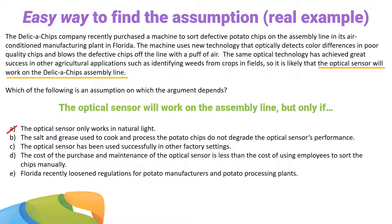Let's take a look at C: but only if the optical sensor has been used successfully in other factory settings. C is actually out — just because it worked in other factory settings doesn't necessarily mean it will work in this particular factory. Now D: but only if the cost of the purchase and maintenance of the optical sensor is less than the cost of using employees to sort the chips manually. D is out — we don't care about costs or profits. The argument only cares if the optical sensor will work on the line, not how cost-effective it is. D is out of scope.